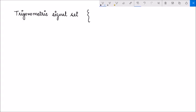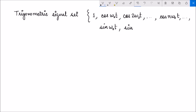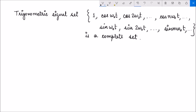Now, before speaking about Fourier series, let us consider the trigonometric signal set defined as: a constant, cos(ω₀t), cos(2ω₀t), and so on up to cos(nω₀t), along with sin(ω₀t) and so on up to sin(mω₀t), and so on up to infinity. We can show that this is actually a complete set. To verify, let us examine whether it is really an orthogonal set by checking the inner product of cos(nω₀t) and cos(mω₀t).